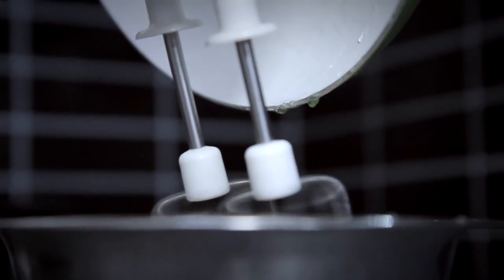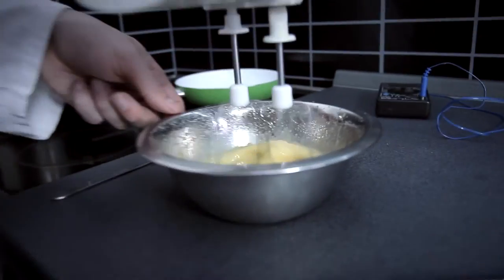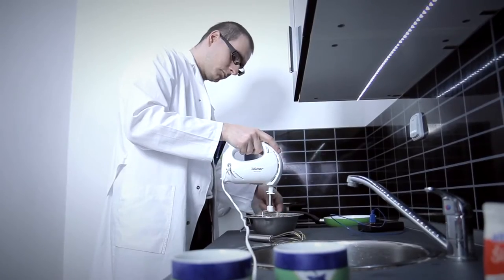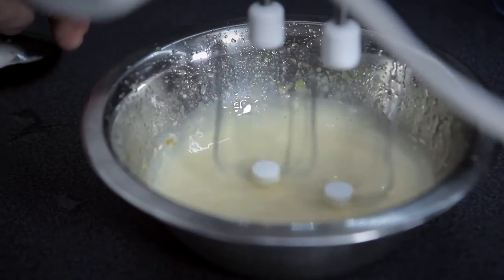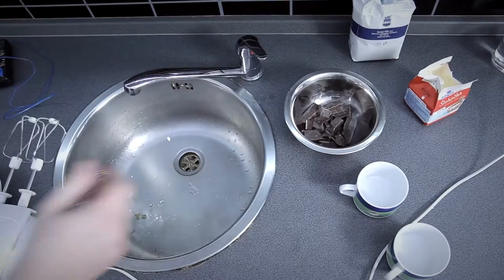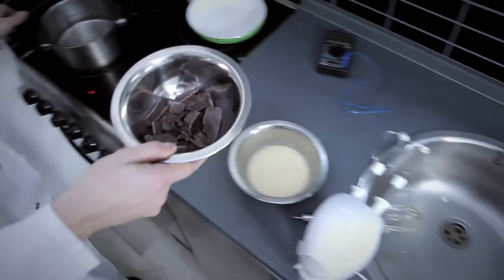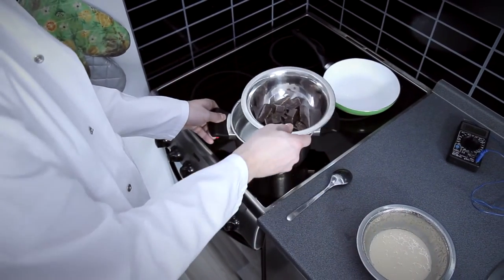Now whisk it up until its volume increases several times. Take the other metal bowl, melt the chocolate, and then combine it with the whisked eggs.